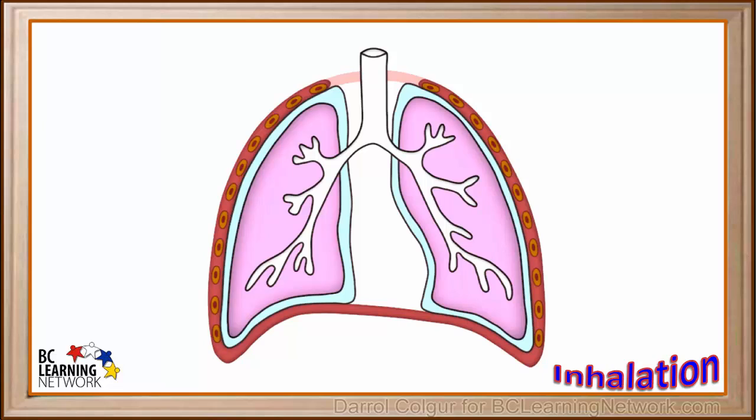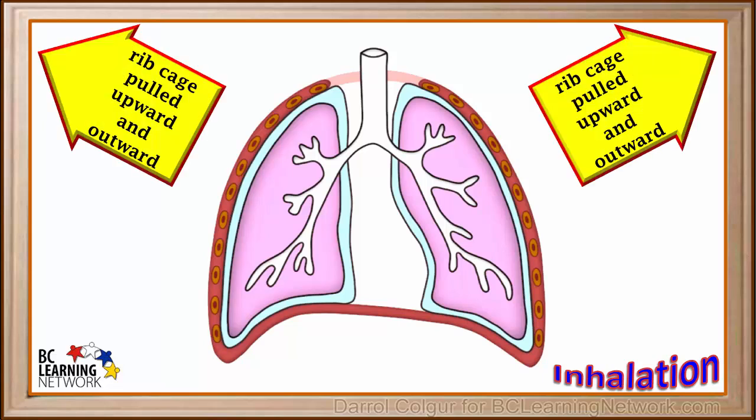Let's look at what happens during inhalation. The muscles between the ribs contract and pull the ribcage upward and outward. At the same time, diaphragm muscles contract and pull the diaphragm downward. Let's watch as this happens.